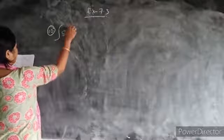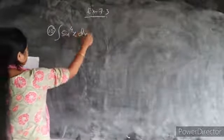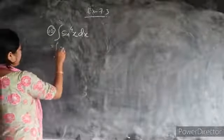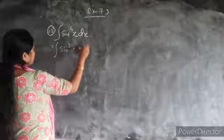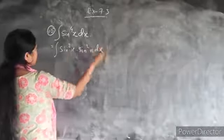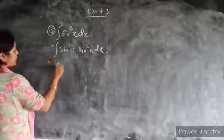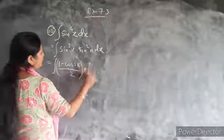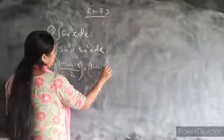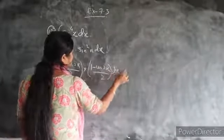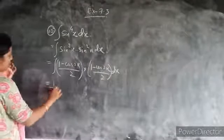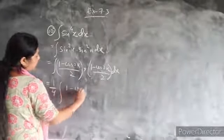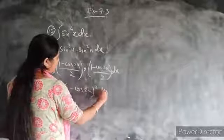In question 10, we have the integral of sin⁴x dx. So here I am keeping it as sin²x into sin²x dx. This is sin²x, which is going to be (1 minus cos2x)/2 into (1 minus cos2x)/2, giving us (1 minus cos2x)² dx.